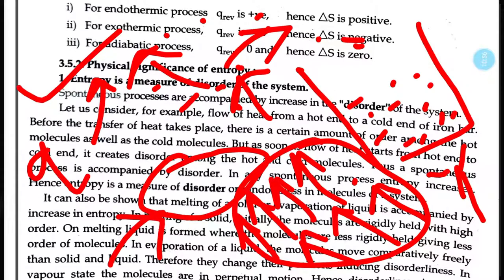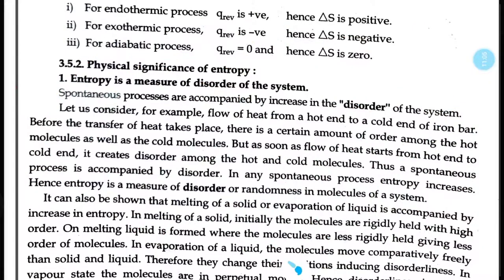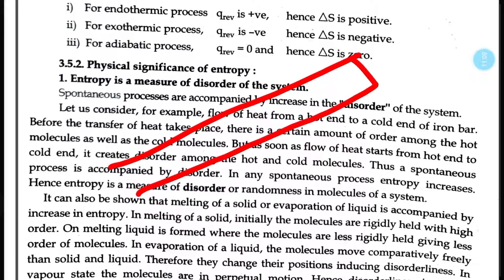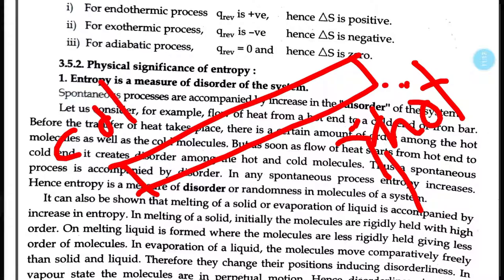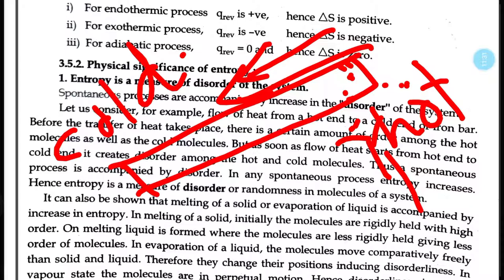Another example: if we use a steel bar or iron bar and supply heat at one end with a burner, the other end is cold. Heat tries to flow from the hot end to the cold end. The order of the molecules gets disturbed and changed — both in the hot region and in the cold region. So from this, we are able to say that entropy is a measure of disorder of the system.